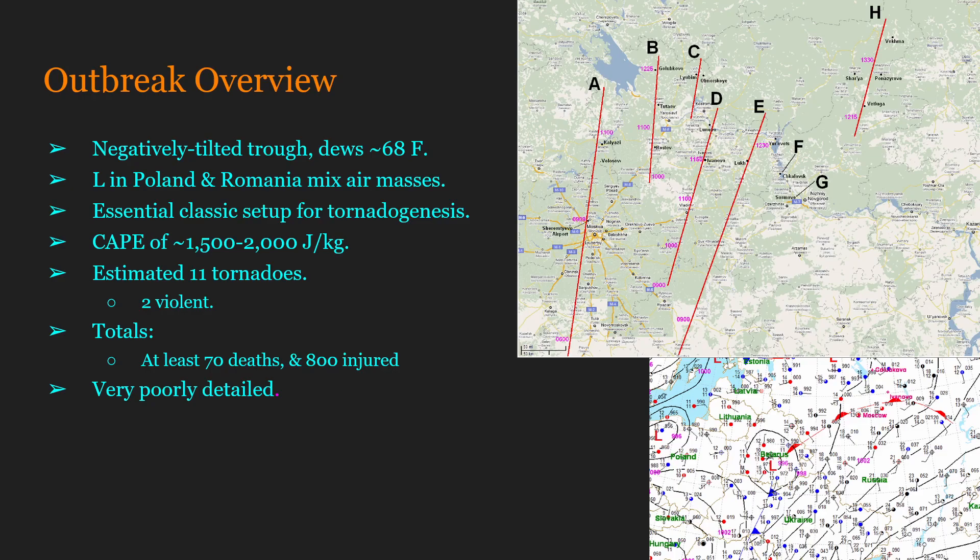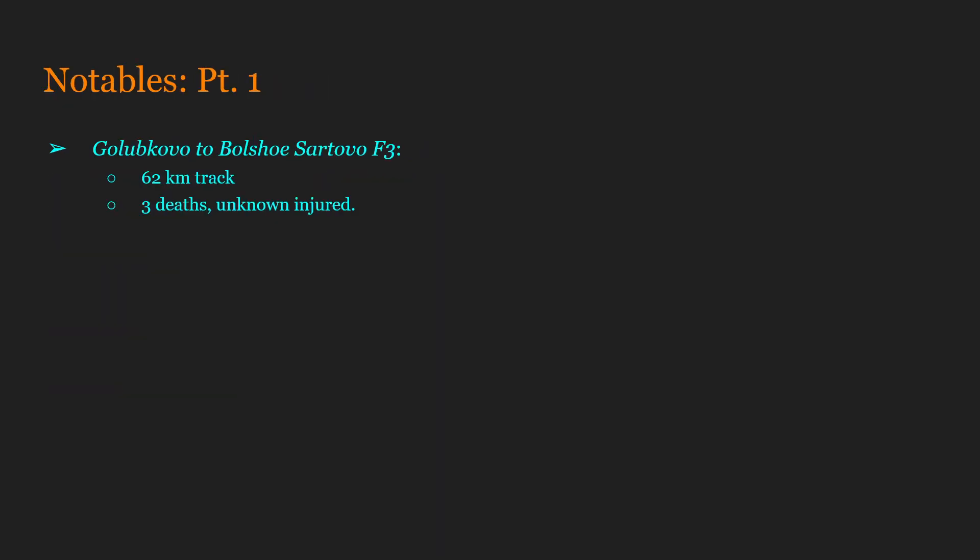With all these ingredients and our tornadoes, what are our notables? Our first notable is the Golubkovo to Bolshu Sartovo F3. Apologies in advance for any possibly wrong or mispronounced names — these are transliterated from the Cyrillic alphabet into English.